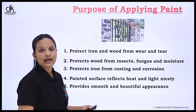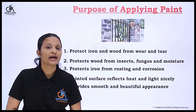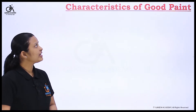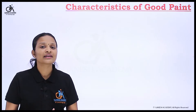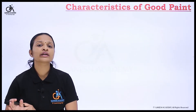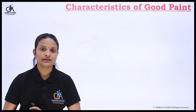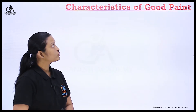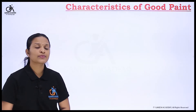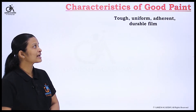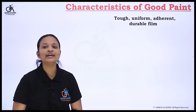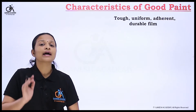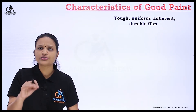These are the purposes of paint — that is why we apply it. Next, I will explain the characteristics of good paint and how we decide that a paint is of good quality. The first characteristic is that it should form a tough, uniform, adherent, and durable film when applied on any object or wall.